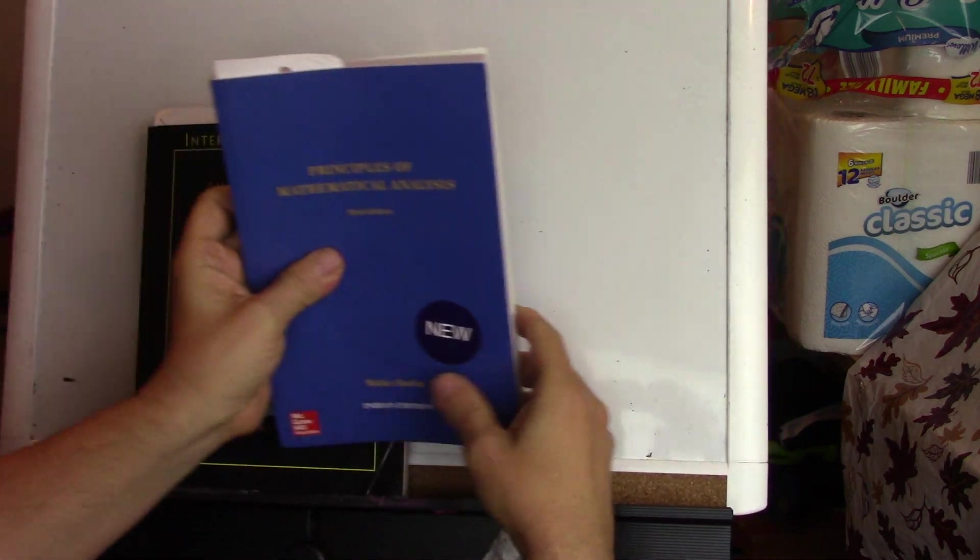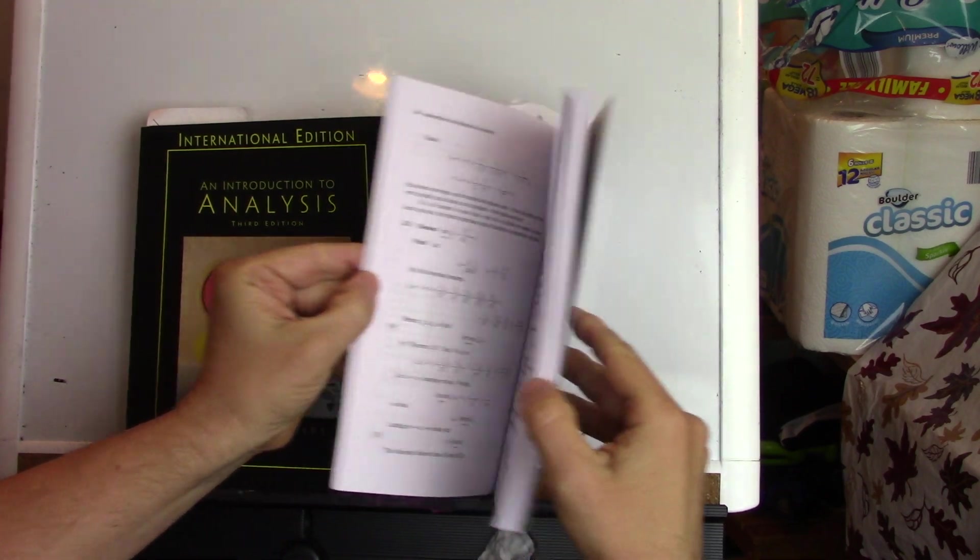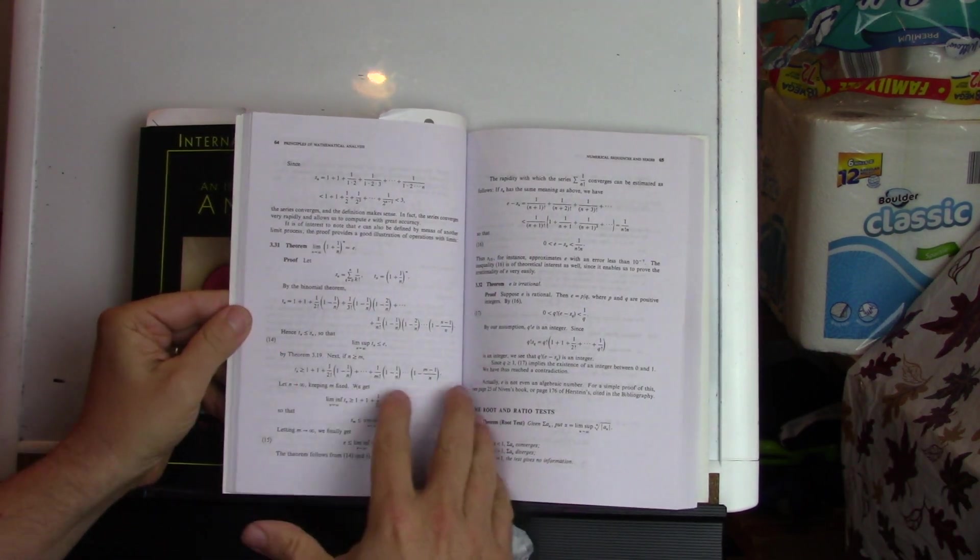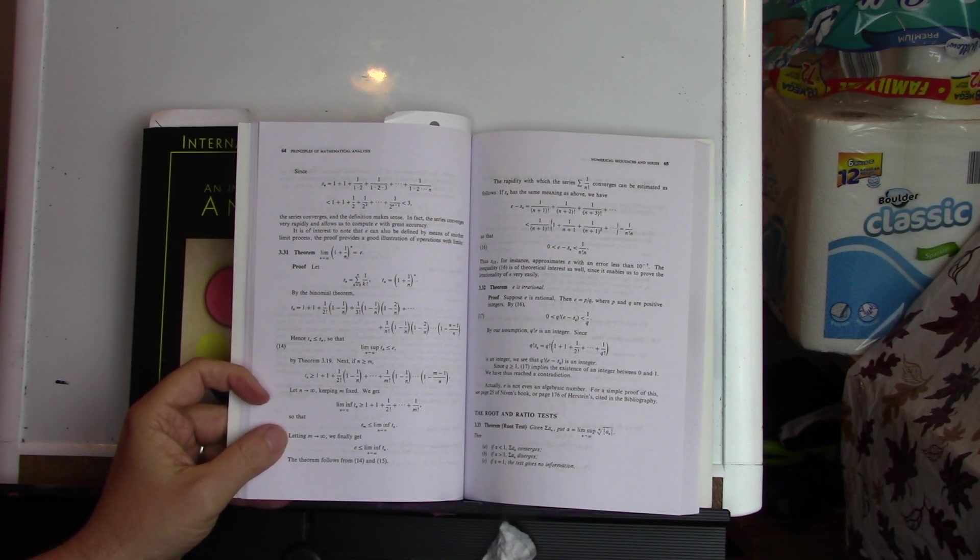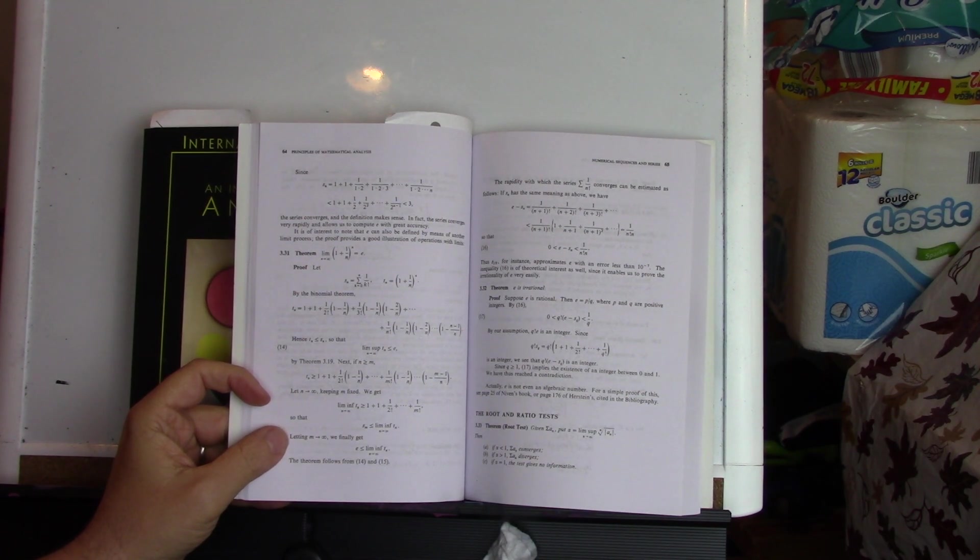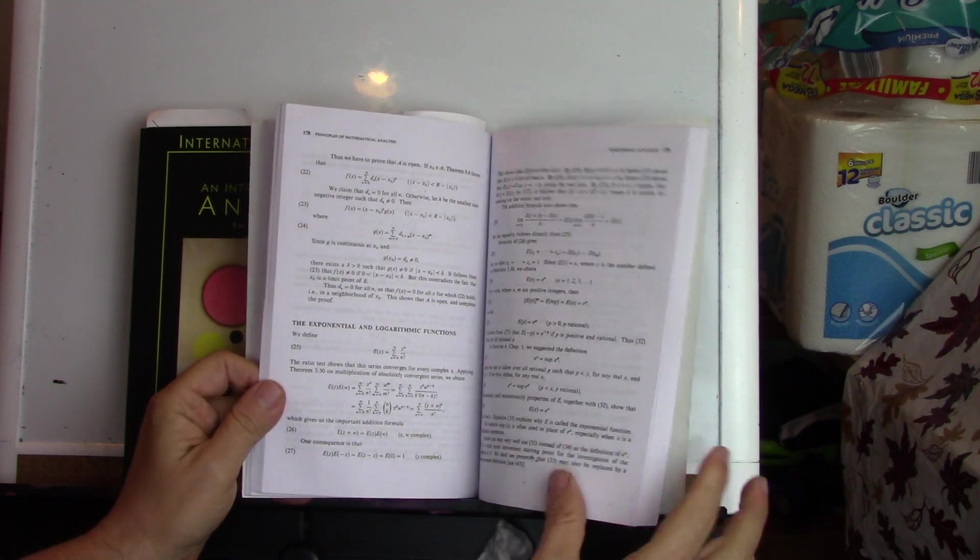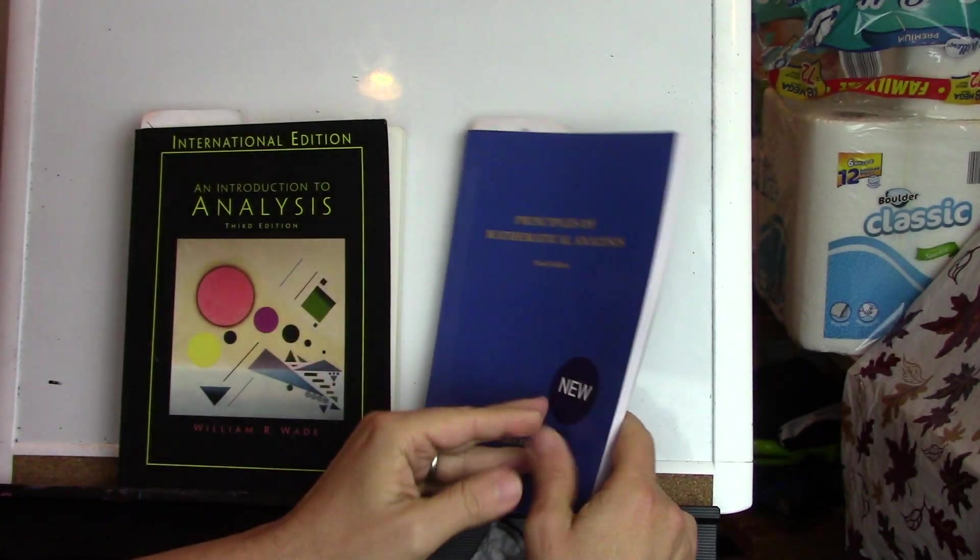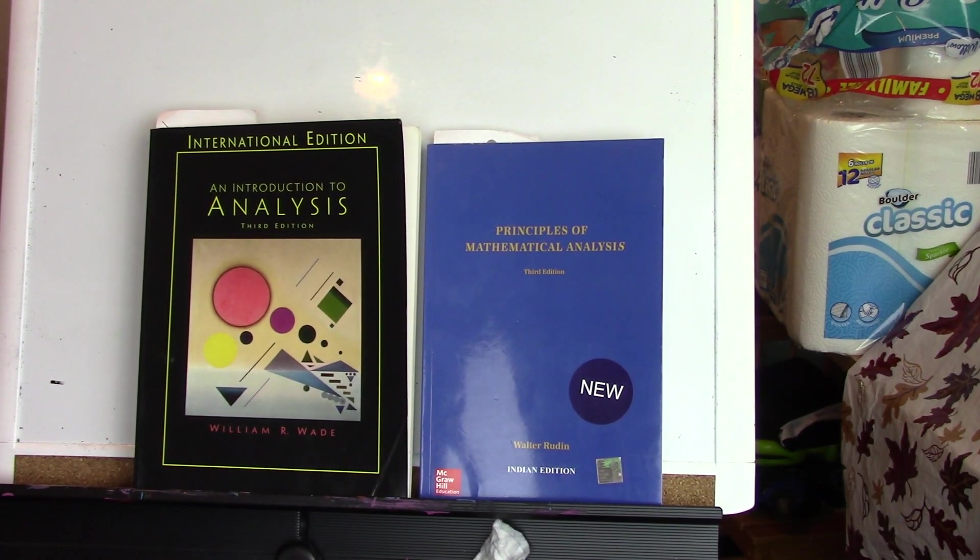And then of course Rudin, which is really written like a poem. Of course, a book that needs no introduction. And so I read from it. And I don't know, I'm not sure if I would ever have time to go through it in detail and just read it all cover to cover. It's one of those that it's a nice to do someday, perhaps. I'm not sure. So there you have it. That's my analysis books for 2023.